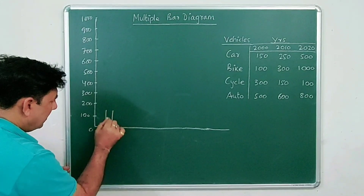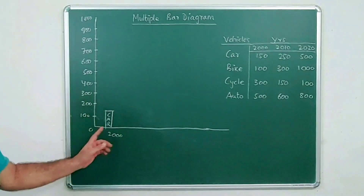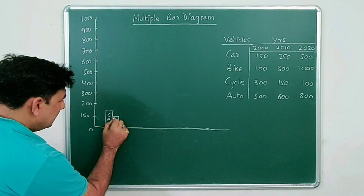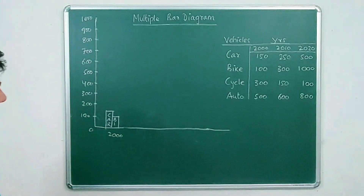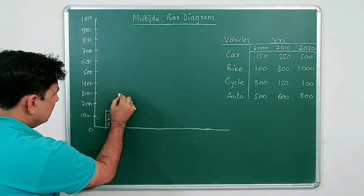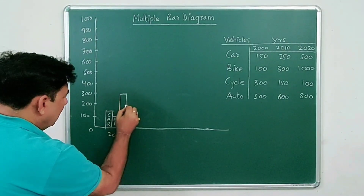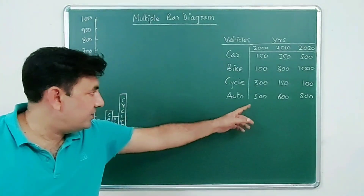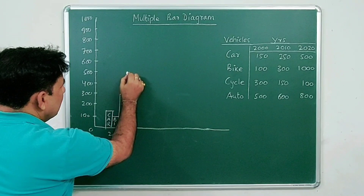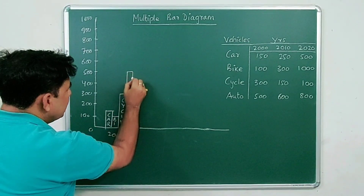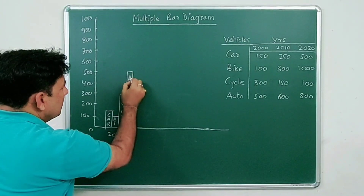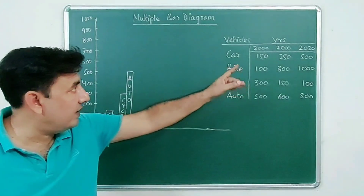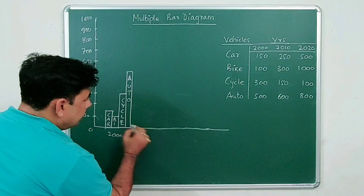For year 2000: Cars were 150, so plot between 100 and 200 — this is the Car bar. Bike is 100, plot here — this is the Bike bar. Cycle is 300, so this is 300 — all bars should be of equal width. Auto rickshaws are 500, so draw the bar up to 500. This completes the bars for year 2000.